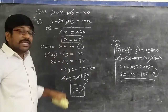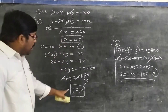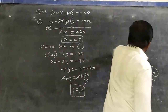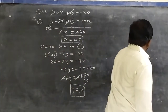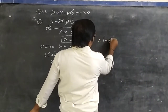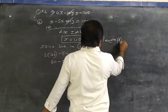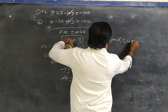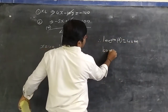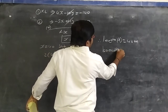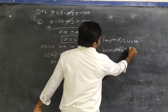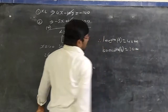Therefore, the length of the rectangle L = x = 40 meters and the breadth B = y = 30 meters.